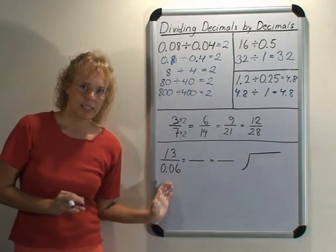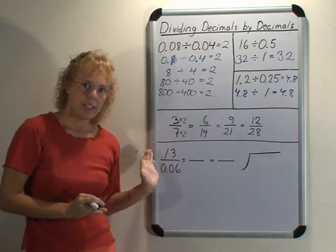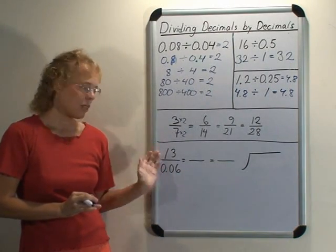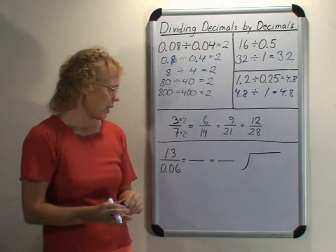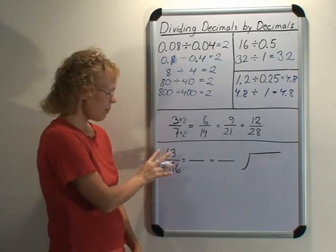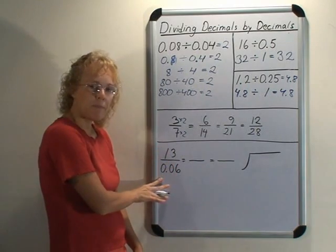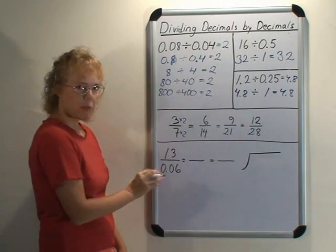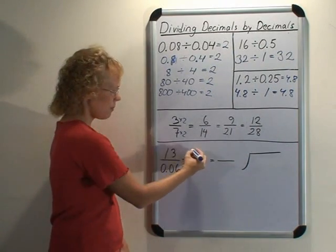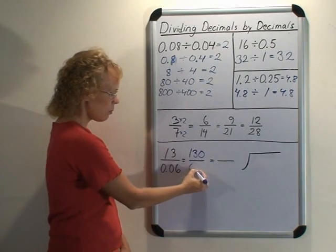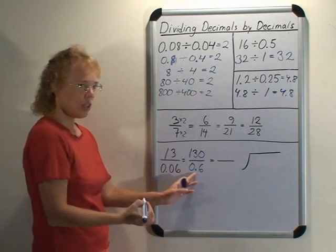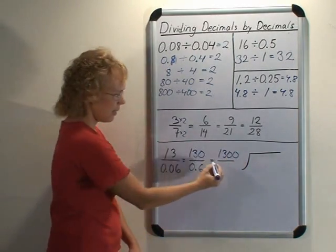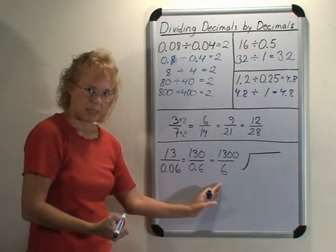Lastly we're going to look at this example here. It is 13 divided by 0.06. I wrote it down like this looking like fractions. And first we're going to multiply both the dividend and the divisor by 10 or 100 or 1000 so that we get this to be a whole number. Let's say we first multiply by 10 step by step. Here's 130 and here's 0.6. Not yet a whole number, so we'll repeat it one more time. Multiply both by 10, and now we get 1,300 divided by 6. And now we're ready to divide here.